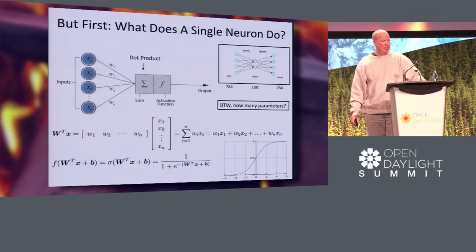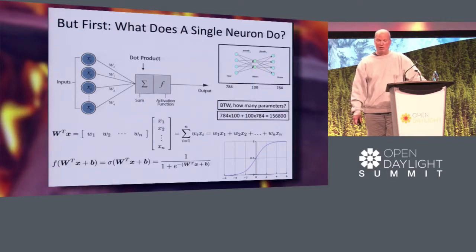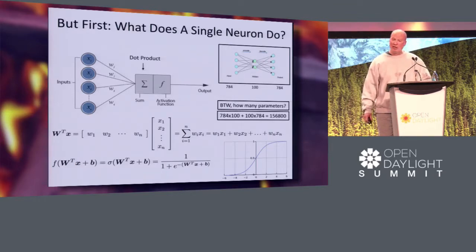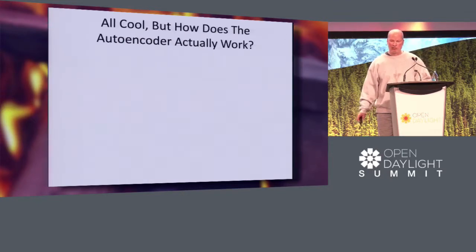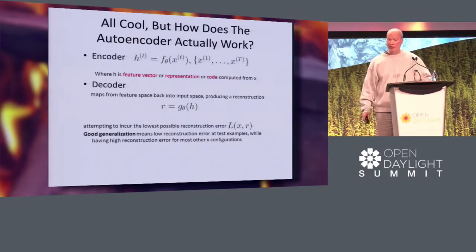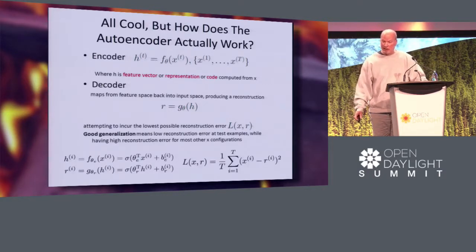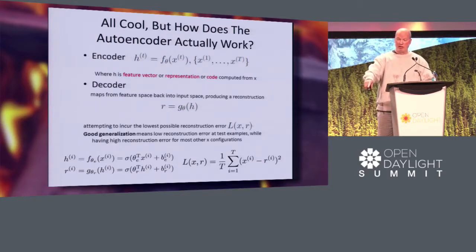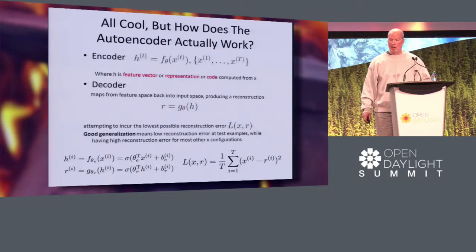How does the autoencoder really work? The encoder is just some function — you encode the input into the 100-dimensional Y, then hand that to a decoder. You compute how well you did using a loss function: you just subtract the two vectors. This is called minimum squared error — it gives you the average error, and then you try to minimize that. That's how this thing learns. Adjusting the weights to get the minimum error is what learning really is.